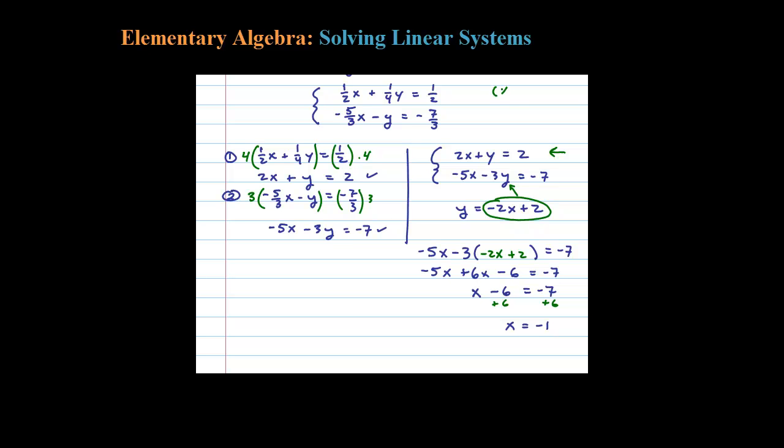Now remember, when solving these, the answers will always look like an ordered pair (X, Y). What we've just found is X - that's only half the problem. When X = -1, we have to figure out the corresponding Y value. That's where we back substitute.